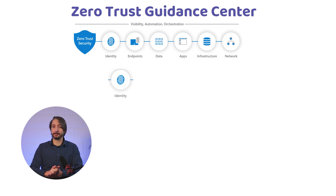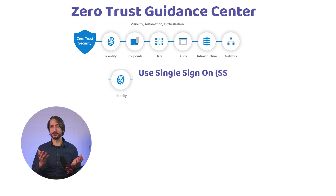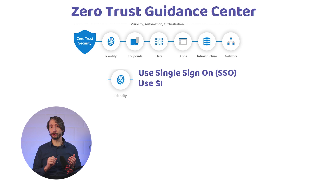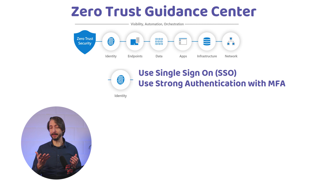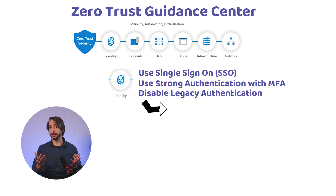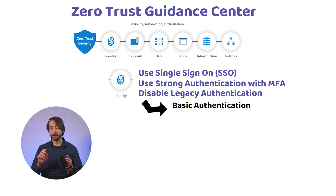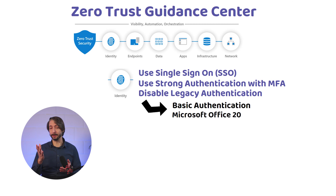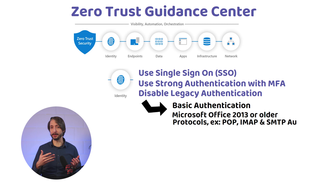For identity, we can use single sign-on, SSO, which prevents users from leaving copies of their credentials in various apps. We can use strong authentication — Azure AD Multi-Factor Authentication, MFA. We should also disable legacy authentication, also known as basic authentication, which is a method for collecting usernames and passwords. Examples include Microsoft Office 2013 and older, and apps using protocols such as POP, IMAP, and SMTP authentication.